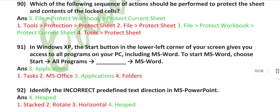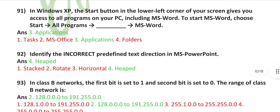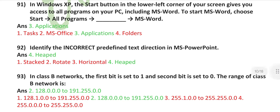Which of the following sequence of actions should be performed to protect the sheet and contents of the locked cells? File, then go to protect workbook, then go to protect current sheet. In Windows XP, the start button is in the lower left corner of your screen, gives you access to all programs on your PC, including MS Word. To start MS Word, choose start, then go to all programs, then go to applications, then go to MS Word.